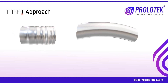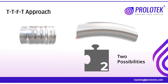The last T in this approach is for two possibilities. The four errors — size, form, orientation, and location — can occur at a surface level or at the feature of size level. We must decide whether to control the error at the surface level, which is called feature control, or at the feature of size level, called feature of size control. Knowing this makes it very easy to apply the 14 GD&T symbols.